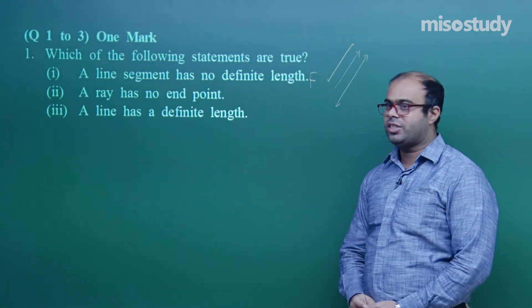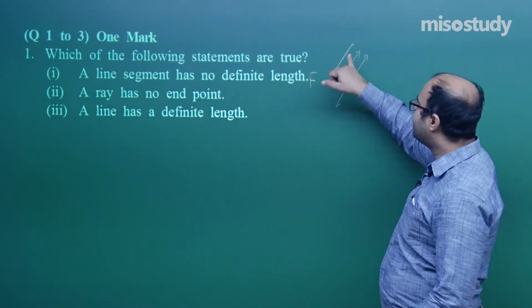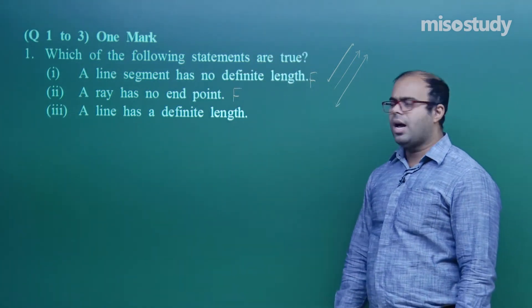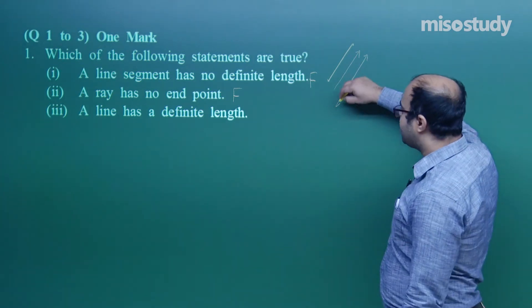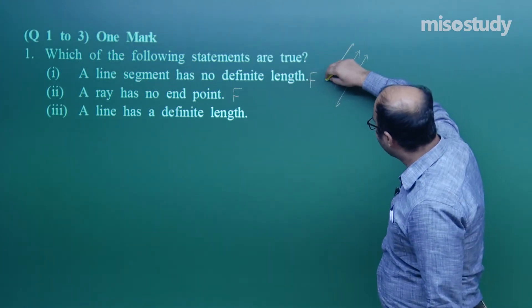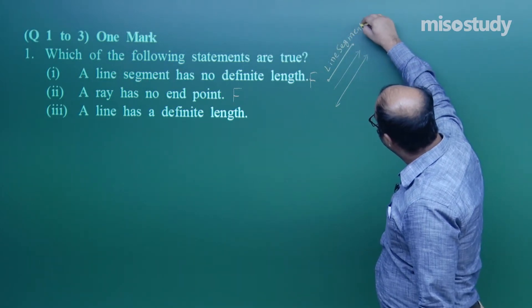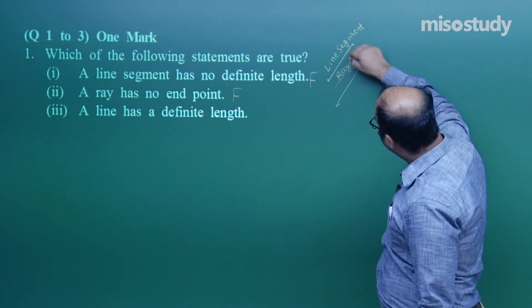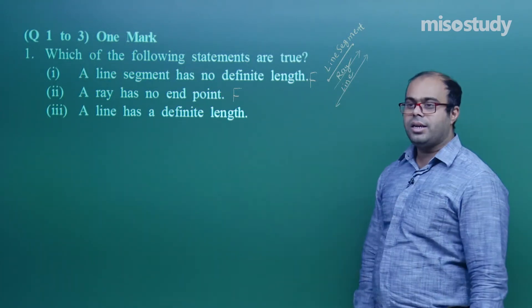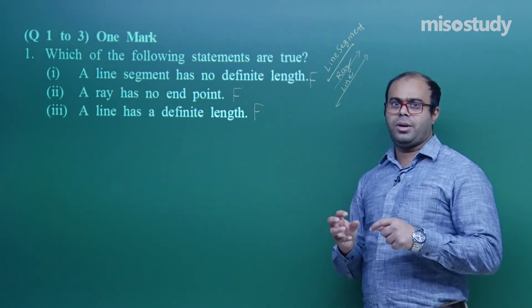Second statement: a ray has no end point. As we just discussed, a ray has one end point which is the starting point — the other end is not an end point. This is also false. Third statement: a line has a definite length. No, a line does not have a definite length because it extends to infinity on both sides. So line and ray do not have definite length, but a line segment does.